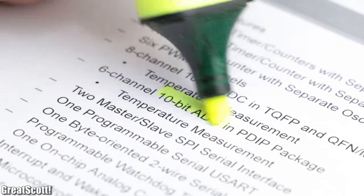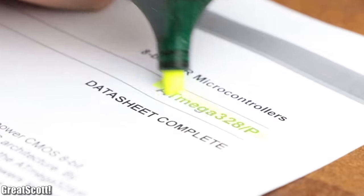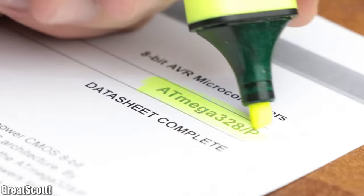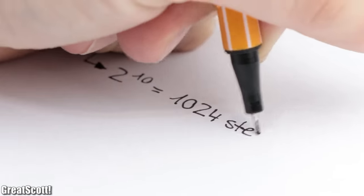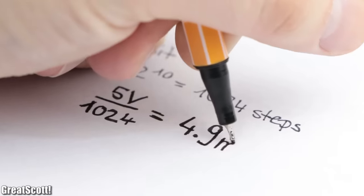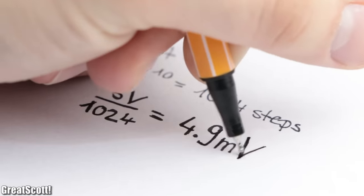The reason is that the 10-bit ADC of the ATmega 328P microcontroller features a resolution of 1024 steps, which equals voltage steps of 4.9 millivolts.